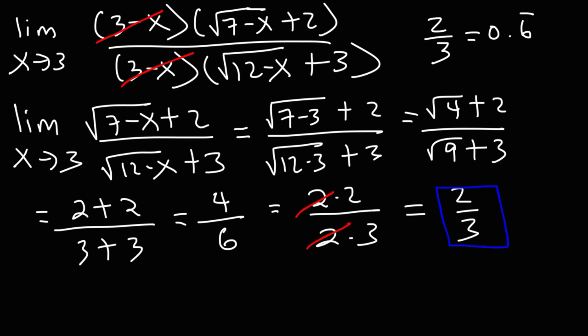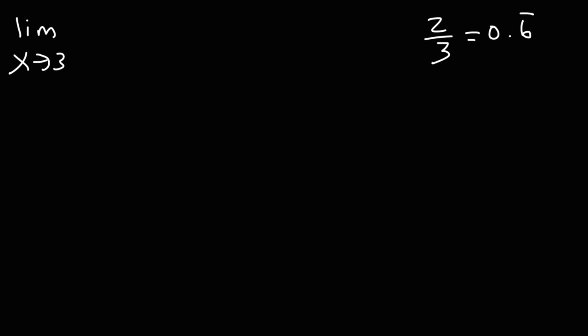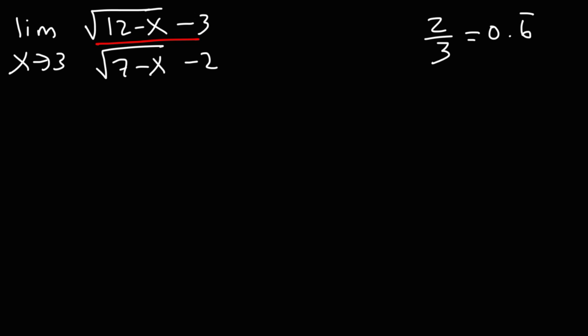Now we can check our work by plugging in numbers into the original expression. This method is very useful — if you have a multiple choice problem and you're not sure how to evaluate the limit, plugging in numbers close to the limit point can always help, especially if you're allowed to use a calculator.